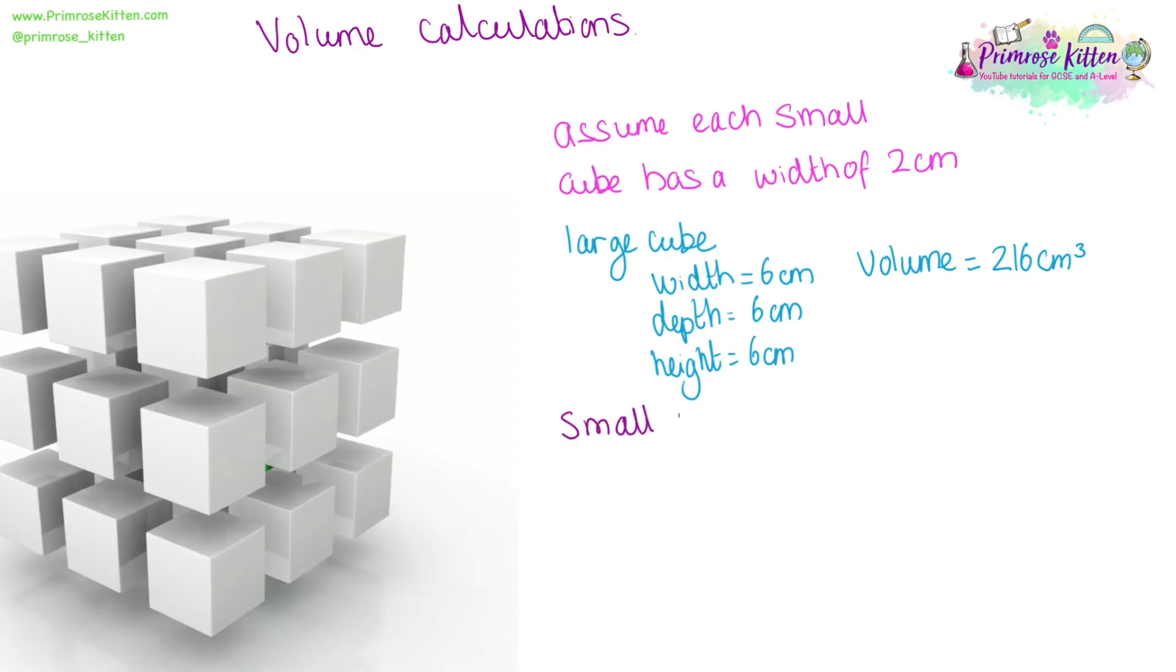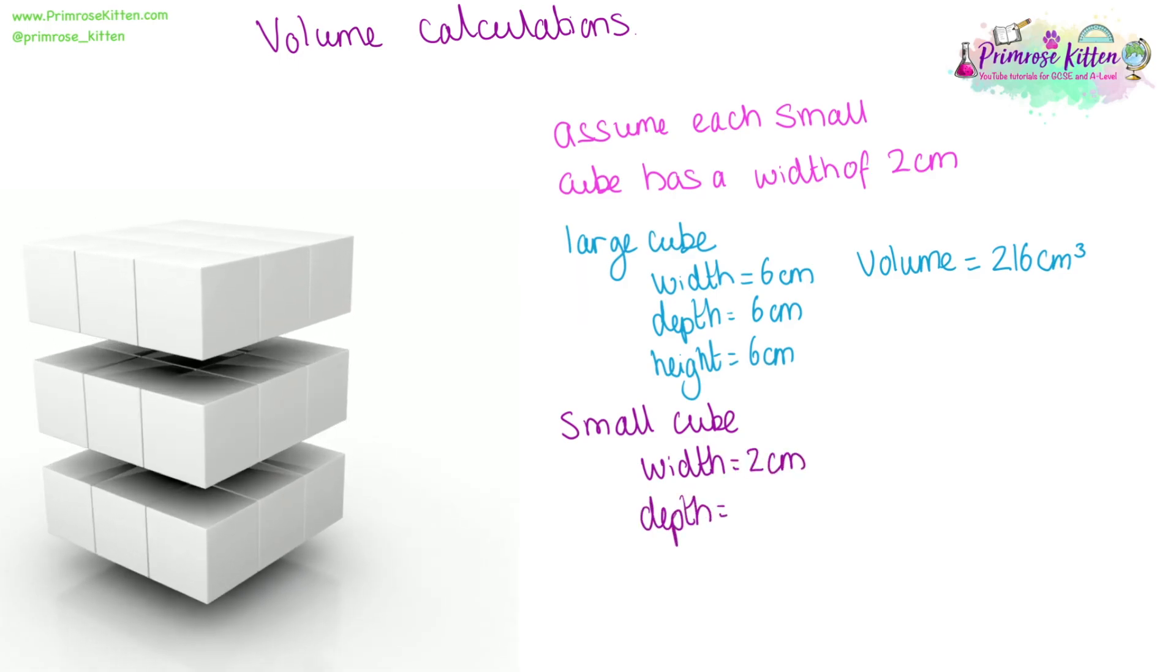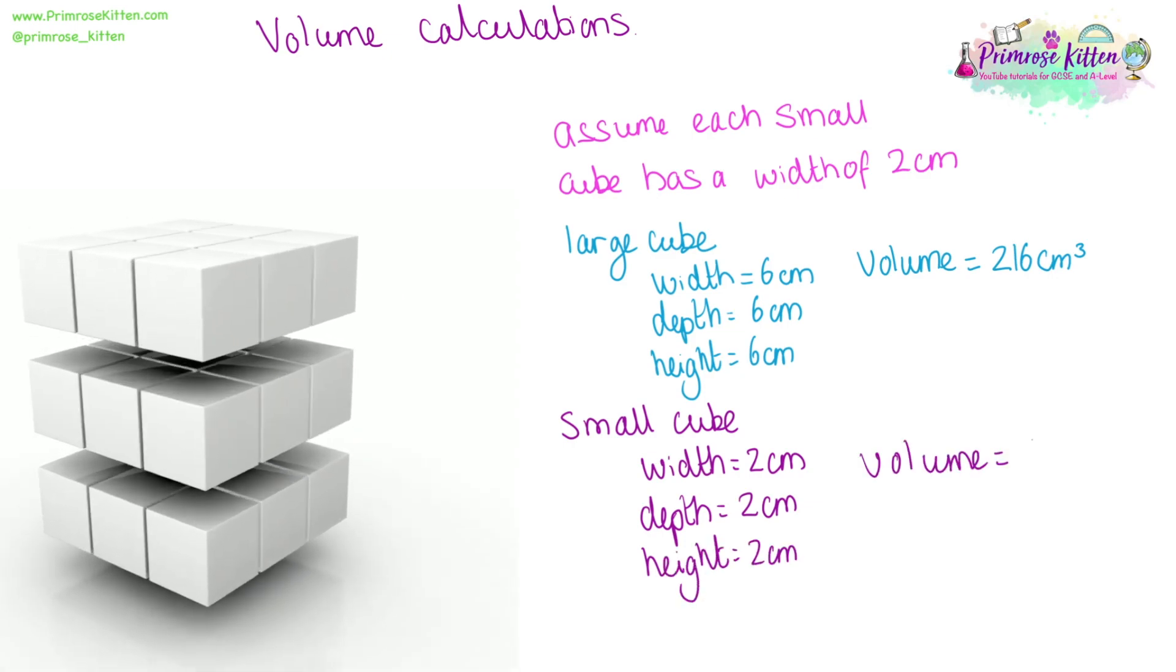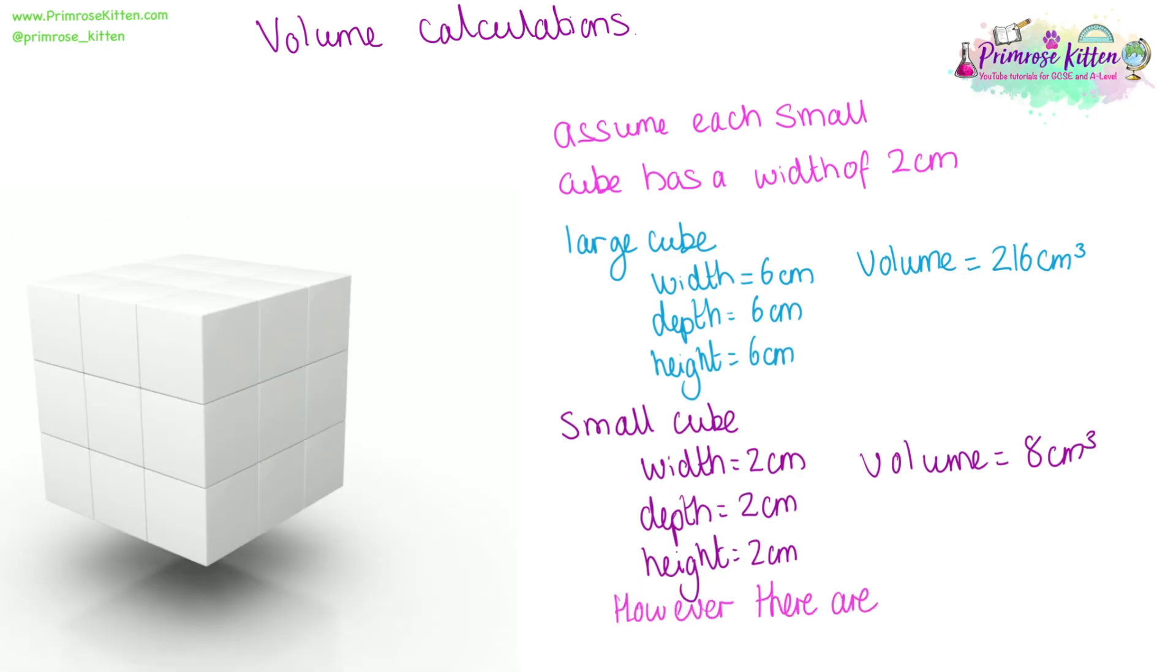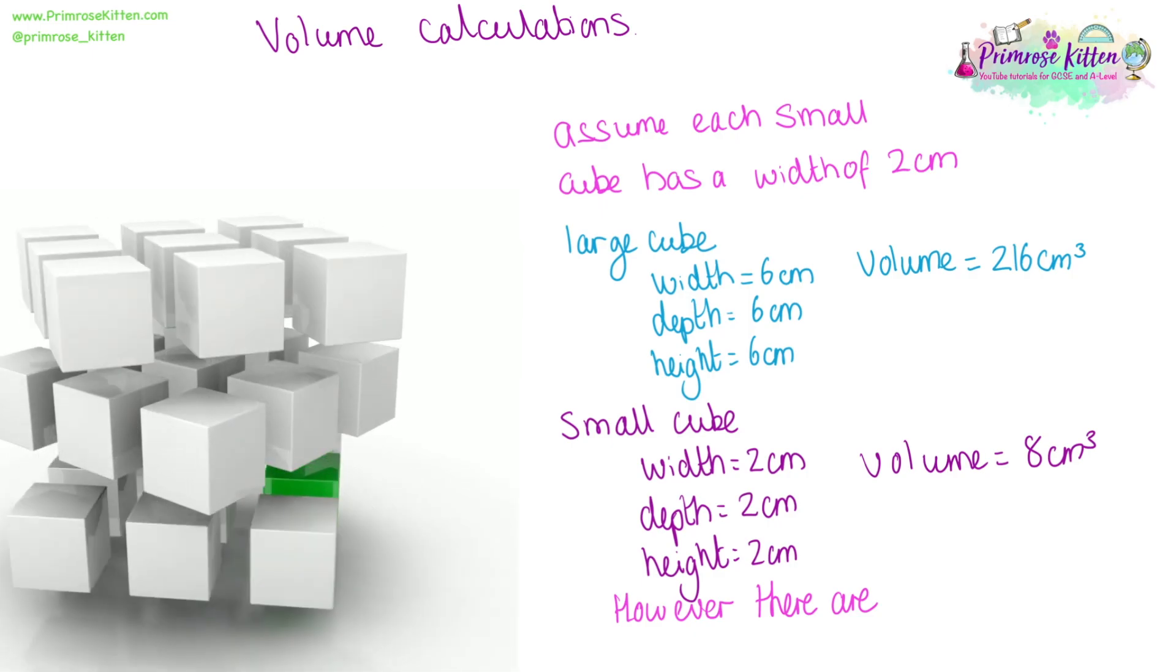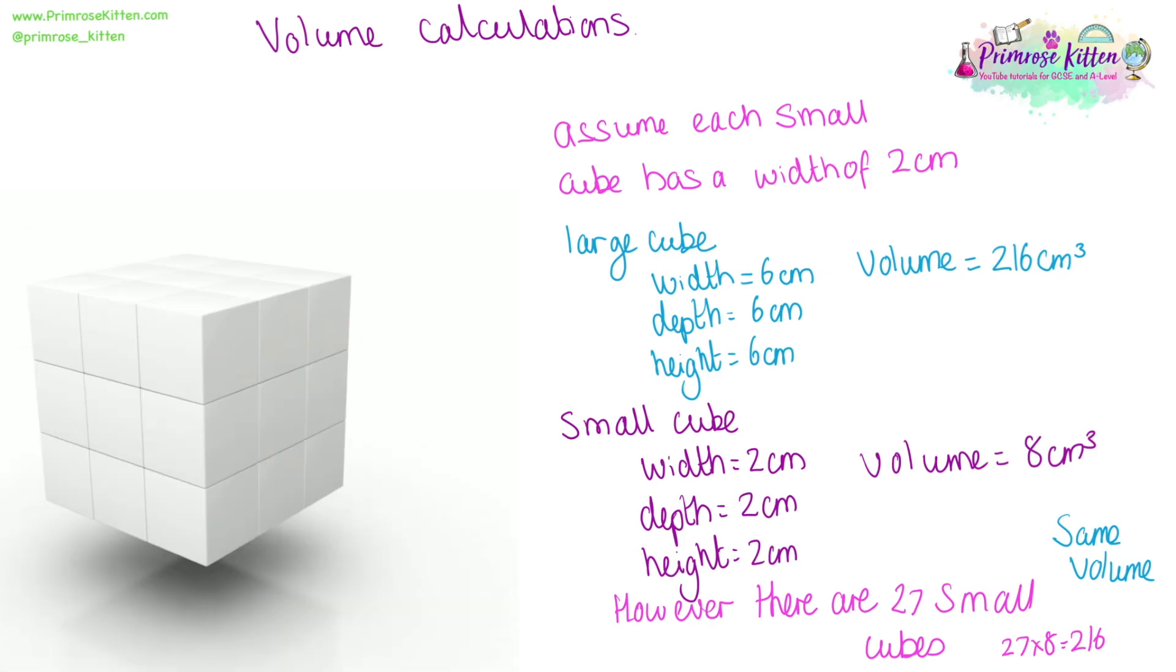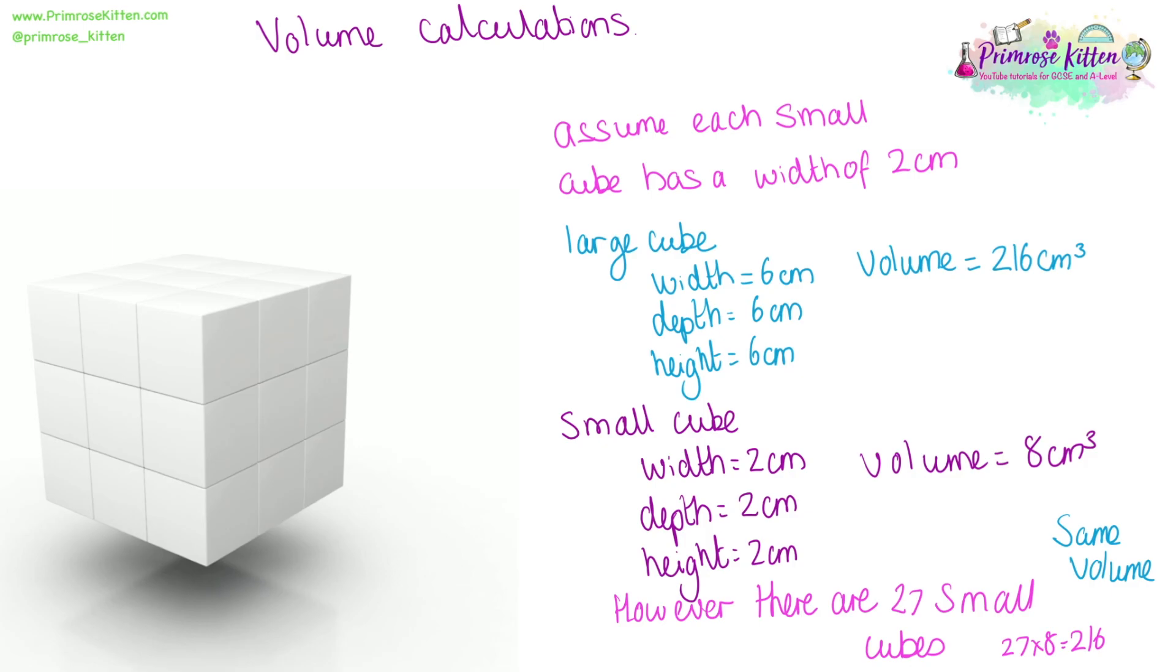If we now look at one of the smaller cubes, the width is two centimetres, the depth is two centimetres, and the height is two centimetres. Two times two times two gives us an overall volume of eight centimetres cubed. However, there are more small cubes than there are big cubes. There are 27 small cubes for every one big cube. So if we do 27 times eight, we get to 216, showing that all of the small cubes together have the same volume as one big cube.